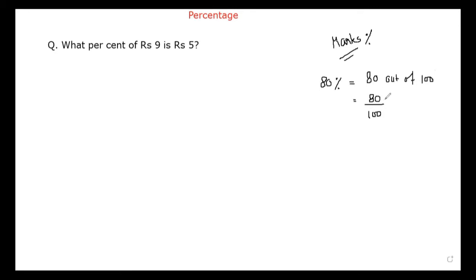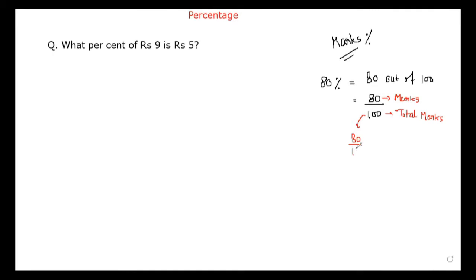So that means 80 is the marks which you are expecting to get, and 100 is the total marks — total marks of every subject basically. So this is 80 upon 100. But to calculate percentage, what you have done is 80 upon 100 multiplied by 100, isn't it, to get 80 percent.